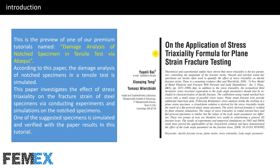This is the preview of one of our premium tutorials named Damage Analysis of Notched Specimen in Tensile Test via Abacus. According to this paper, the damage analysis of notched specimens in a tensile test is simulated. This paper investigates the effect of stress triaxiality on the fracture strain of steel specimens via conducting experiments and simulations on the notched specimens. One of the suggested specimens is simulated and verified with the paper results in this tutorial.